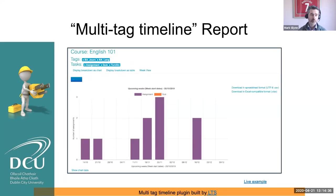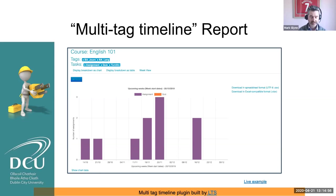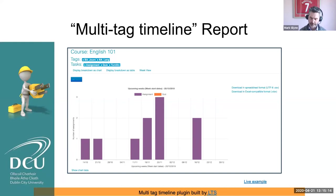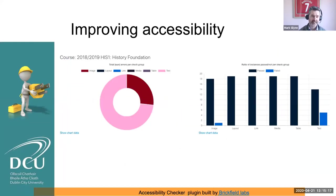We have a plugin developed by LTS which gives us the ability to have tags on courses, enabling us to pull reports and pull data. This particular one gives an assessment timeline. It tells the lecturer of English 101 what assignments are due for their students in English 101 but across the entire program — so all the different modules. The English lecturer knows when the law assessments are on and when the business assessments are on, because you can pull the report across all the modules from a particular program.